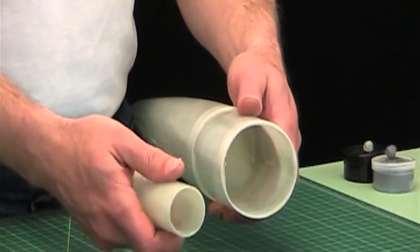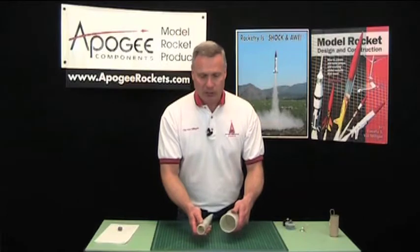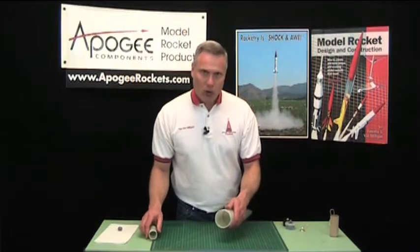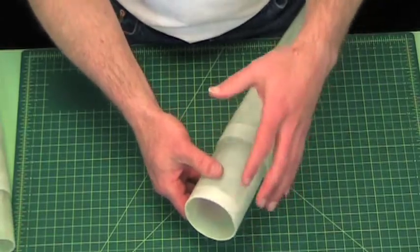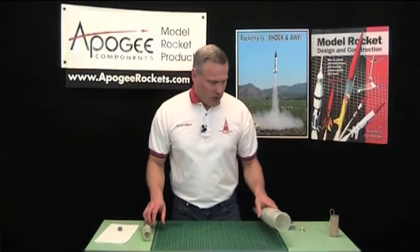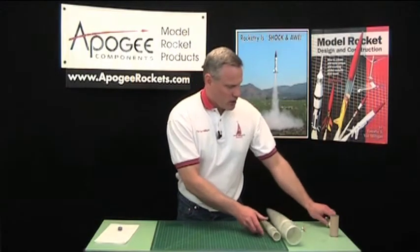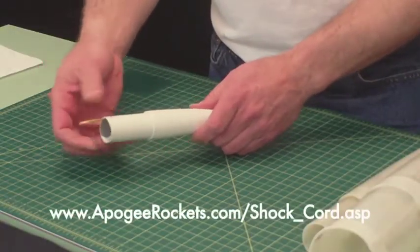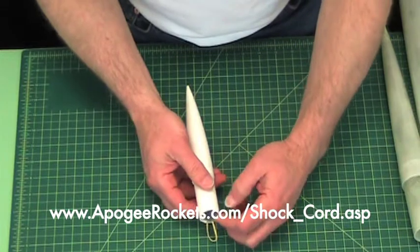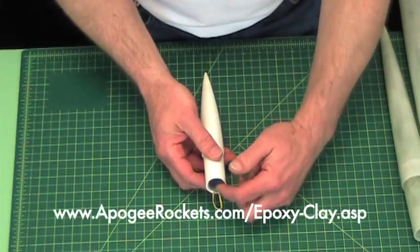Fiberglass nose cones are really strong and you're gonna like them, but the question is how do you attach the parachute or attach the nose cone to the rocket? I want to show you a little trick. For this, I use Kevlar cord and a little glob of fix-it epoxy, which is down in here.